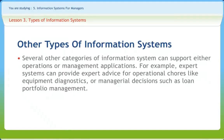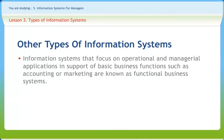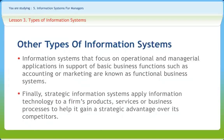Several other categories of information systems can support either operations or management applications. Expert systems can provide expert advice for operational chores like equipment diagnostics or managerial decisions such as loan portfolio management. Knowledge management systems are knowledge-based information systems that support the creation, organization, and dissemination of business knowledge to employees and managers throughout a company. Functional business systems support operational and managerial applications in basic business functions such as accounting or marketing. Strategic information systems apply information technology to a firm's products, services, or business processes to help it gain strategic advantage over its competitors.